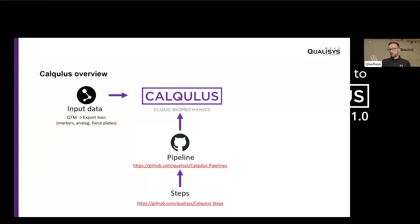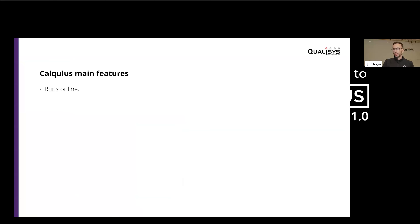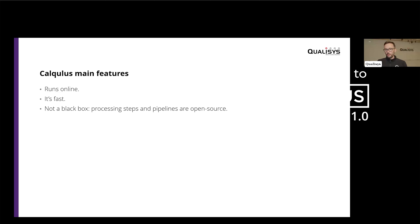Going back to the slides: Calculus uses input data and pipelines with steps, and at the end outputs report data — all the data available to populate a web report, which is then stored on our cloud server and accessible to you. The main features: it runs online and it's fast. On average, for a file of three to five seconds, it will take less than one second to process. All steps and pipelines are open source and available on GitHub.